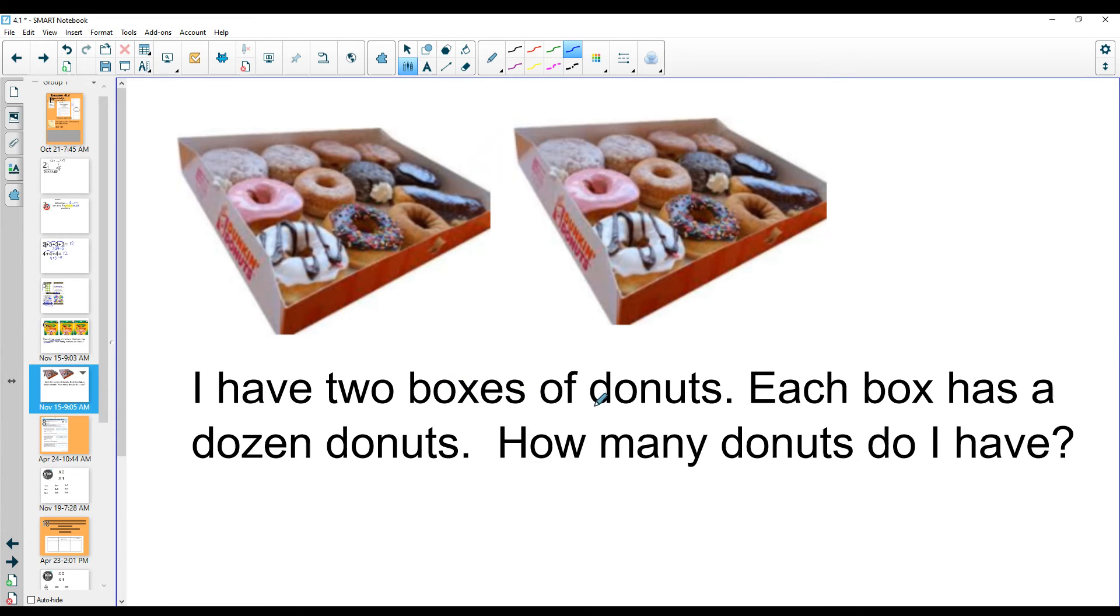Look at here. I have two boxes of donuts. Each donut has a dozen donuts. I know a dozen is twelve. How many donuts do I have? Well, I know this box has twelve and this box has twelve. So if I add twelve plus twelve, I'm going to get twenty-four. Now, what does that look like as multiplying? Well, I added twelve two times. So twelve times two also equals twenty-four. All multiplication is, is just adding multiple times.